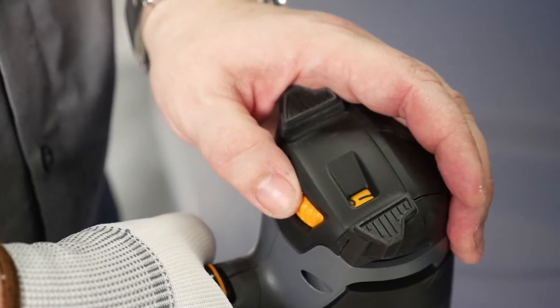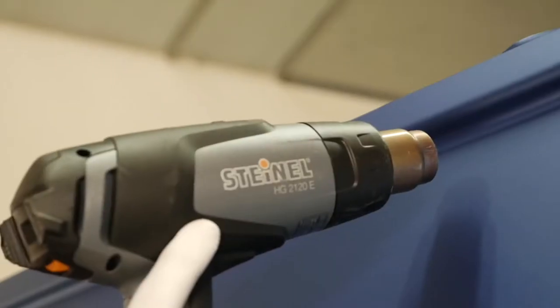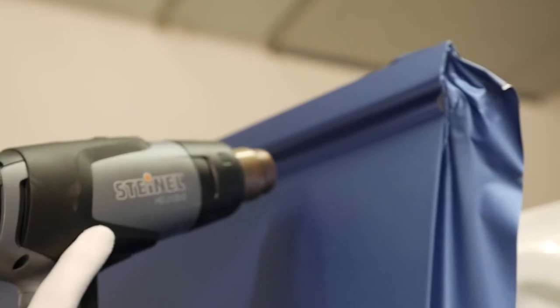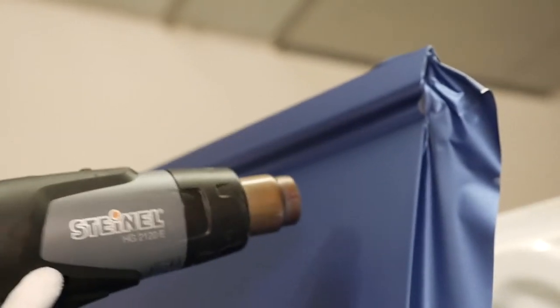Before post-heating, check that there are no air bubbles remaining between the substrate and the film by reheating with the heat gun. Any air bubbles that are detected can be removed using the Air Release tool and the film can be pressed to the substrate again.